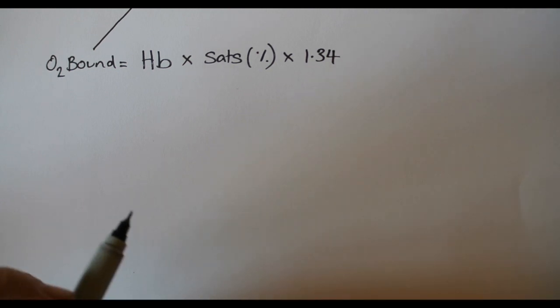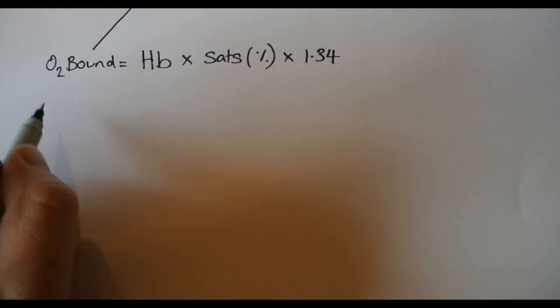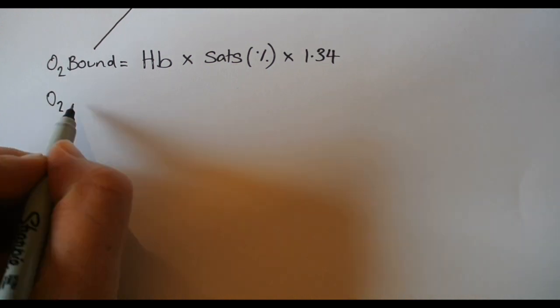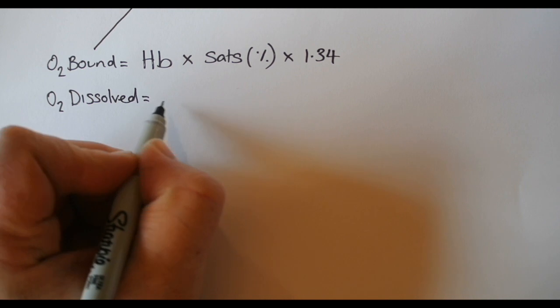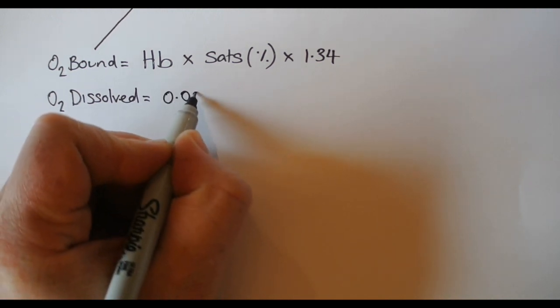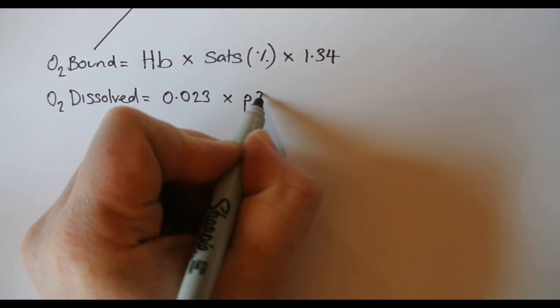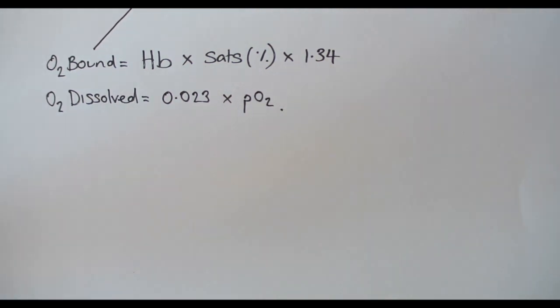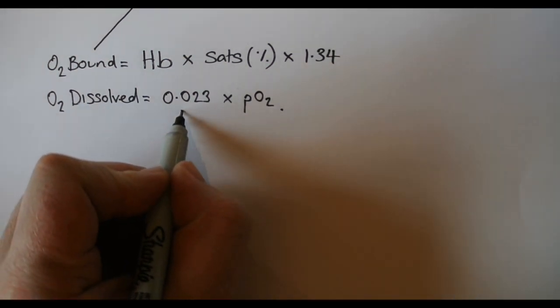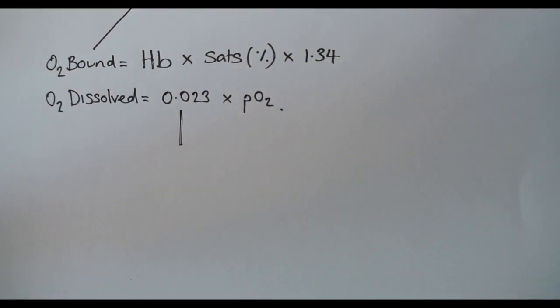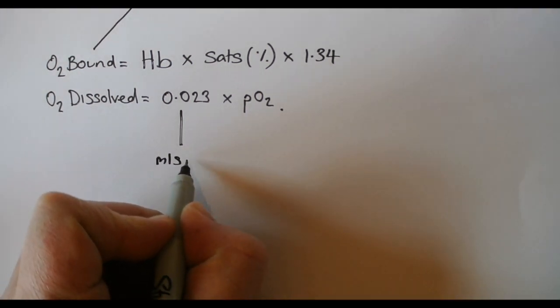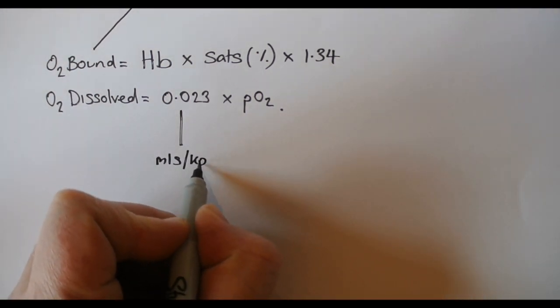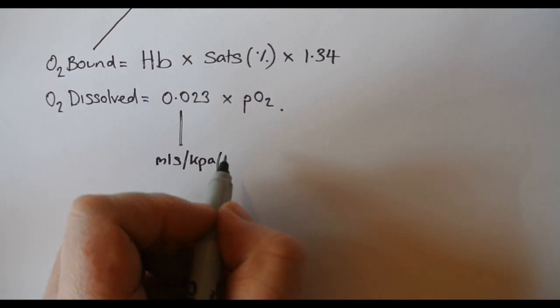Moving on to oxygen dissolved, that is essentially looking at Henry's law. So the partial pressure of oxygen times by 0.023, and that essentially is the amount in mils per kilopascal per hundred mils of blood.